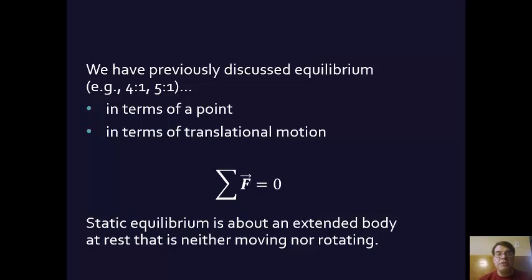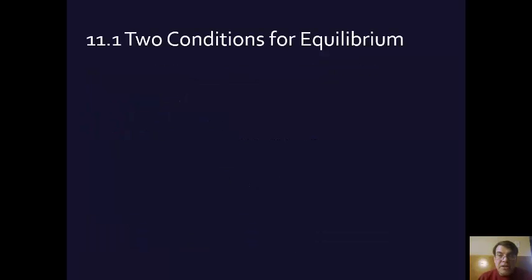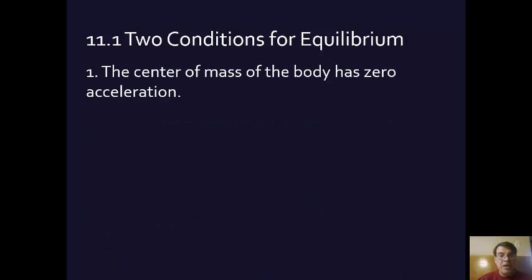So that brings us to the first section of this chapter, which basically sets out the two conditions for equilibrium. A body is at equilibrium if, one, its center of mass has zero acceleration, so that is, it's not moving forward or backwards in terms of its center of mass. And secondly, which is what we've already seen in the book, the sum of the forces on it is zero.